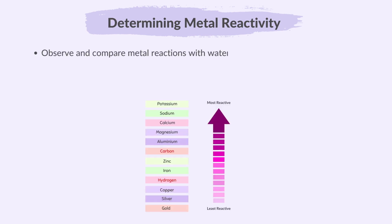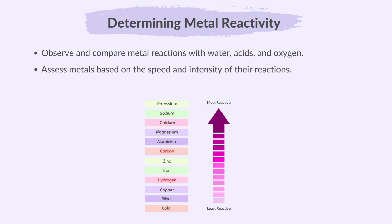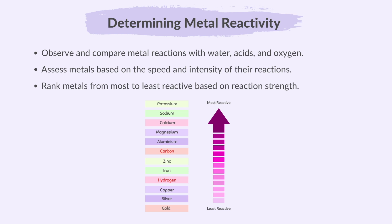To deduce an order of reactivity from experimental results, the reactions of metals with water, acids and oxygen are observed and compared. Metals are assessed based on the speed and intensity of their reactions, with their reactivity ranked from most to least reactive according to the strength of these reactions.